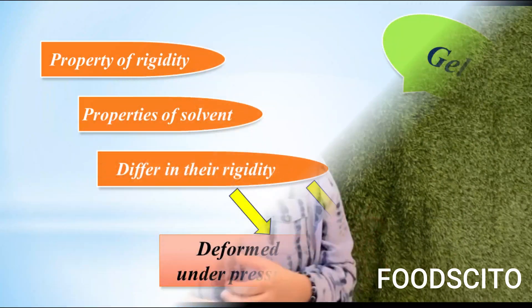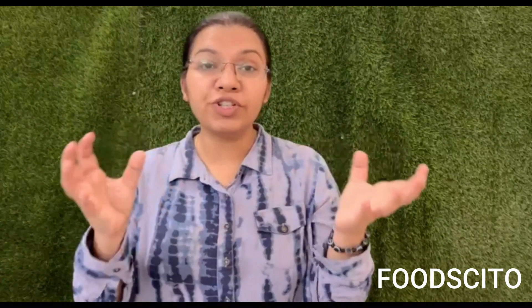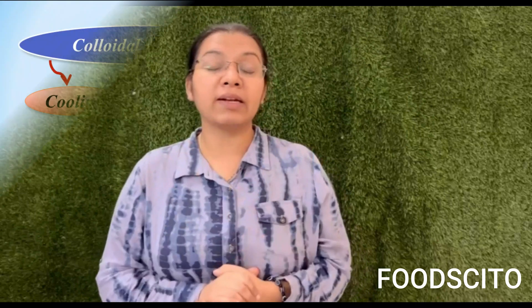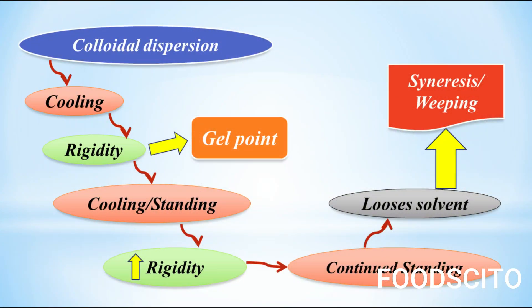For example, some gels are deformed under pressure while others even flow. Now let's discuss what happens to a gel or a colloidal dispersion on cooling or standing. As you can see on the screen, I have prepared a flow chart to understand this phenomenon. For example, you have a colloidal dispersion which is being cooled — what will happen?